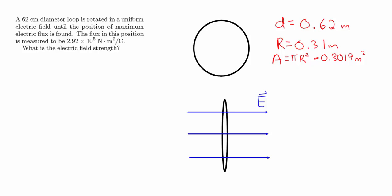This problem is going to look at a basic problem dealing with electric flux. Electric flux is the amount of electric field passing through a certain area. The equation for electric flux is the electric field dotted with the area vector, E dot A.